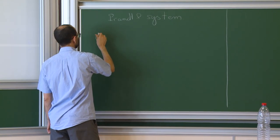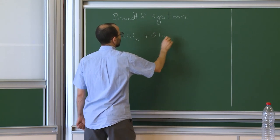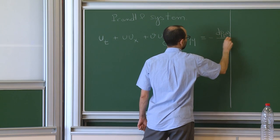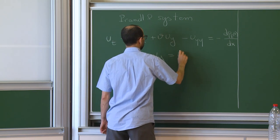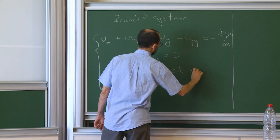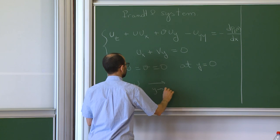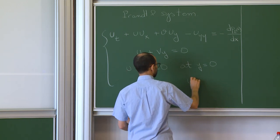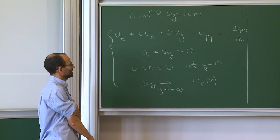The Prandtl system reads like this: u_t plus u u_x plus v u_y minus u_yy, with u_x plus v_y equals zero. And u(x,y) goes to u_Euler(x) when y goes to infinity. So this is the system.